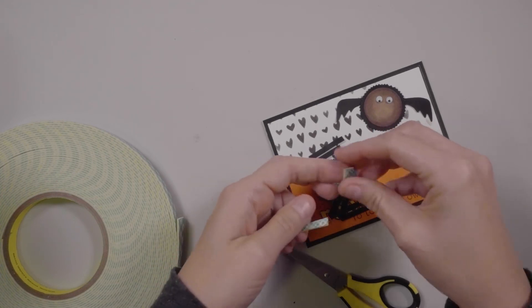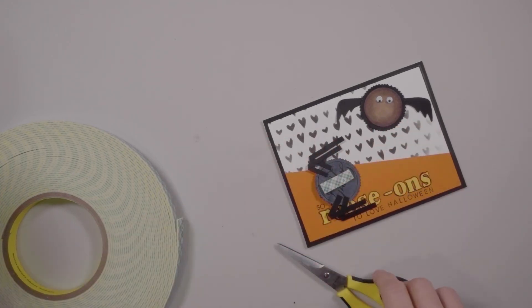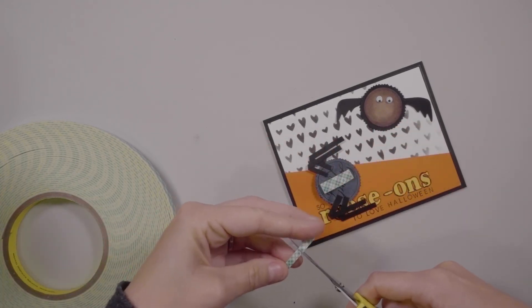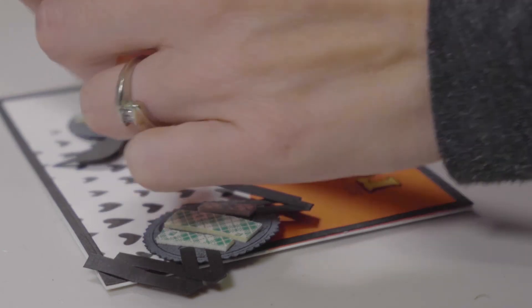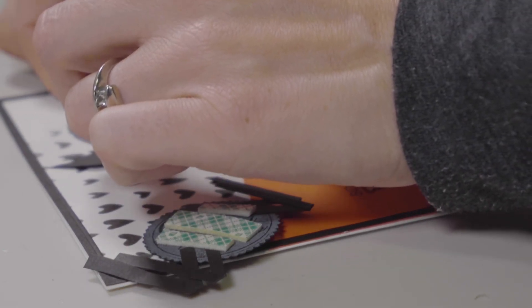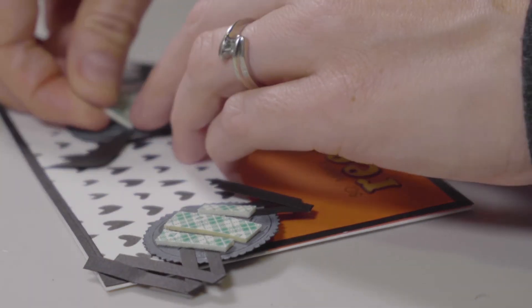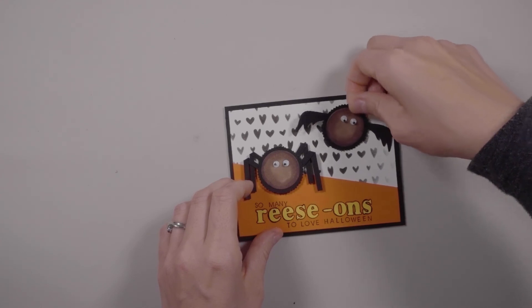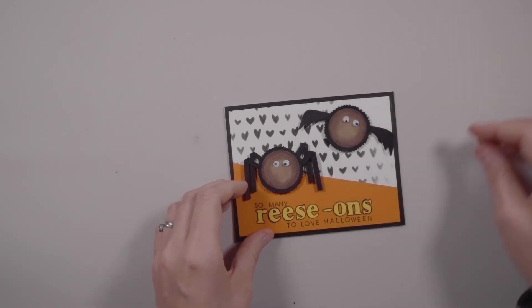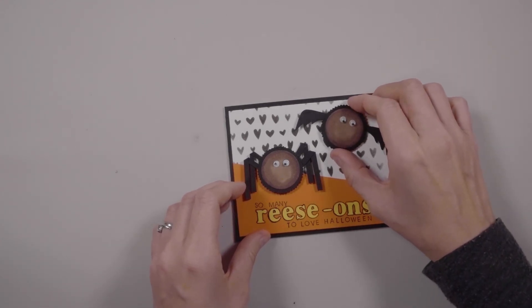And the final bit of adhesive for the day is some foam tape. I'm going to pop up the bat and the spider using this dimensional adhesive. Get them placed on the card before pressing down. There's a little bit of wiggle room here too. I always need wiggle room because I am finicky. Are you? Am I alone here? It's done!